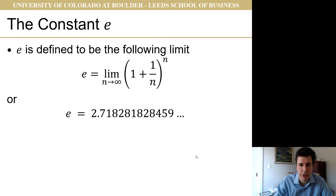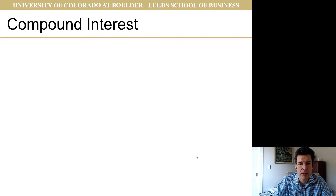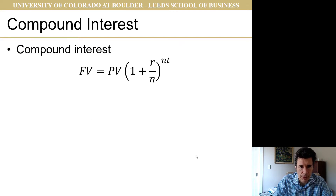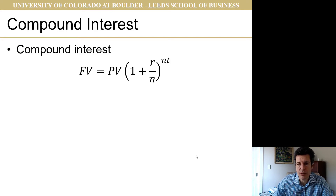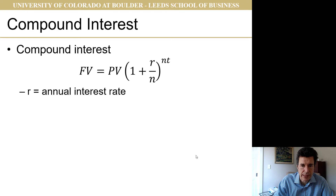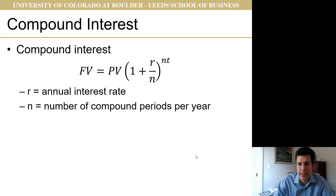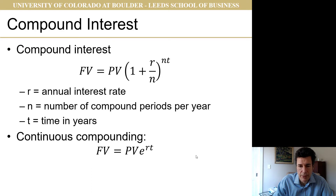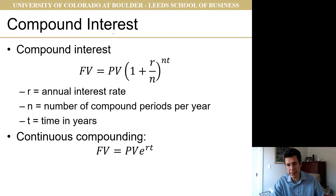One of the places in finance where this shows up, as we described before, is in compound interest. We have the formula: the future value of some cash paid today is the present value times (1 + r/n) to the power nt, where r is the annual interest rate and n is the number of compounding periods per year. This is our standard formula.